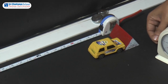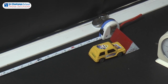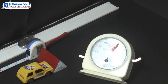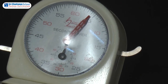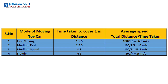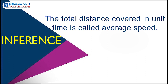The next time, allow the car much slower. This time the time measured is 4 seconds. Tabulate the time taken as 4 seconds. Speed is equal to 100 divided by 4, which is equal to 25 centimetres per second. Inference: the total distance covered in unit time is called average speed.